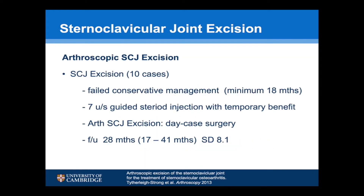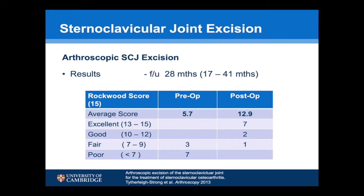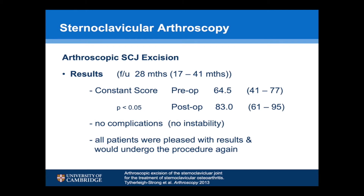We've previously published the results of a prospective series of 10 patients with SCJ osteoarthritis who had all failed conservative management. Seven of them had an ultrasound-guided cortisone injection with temporary benefit. All procedures were done as day cases, and the average follow-up was 28 months (SD 8.1). Their mean Rockwood SCJ score rose from 5.7 pre-operatively to 12.9 post-operatively, and their mean Constant score rose from 64.5 to 83 post-operatively — statistically significant. There were no complications and specifically no evidence of instability, and all patients were pleased and would undergo the procedure again.